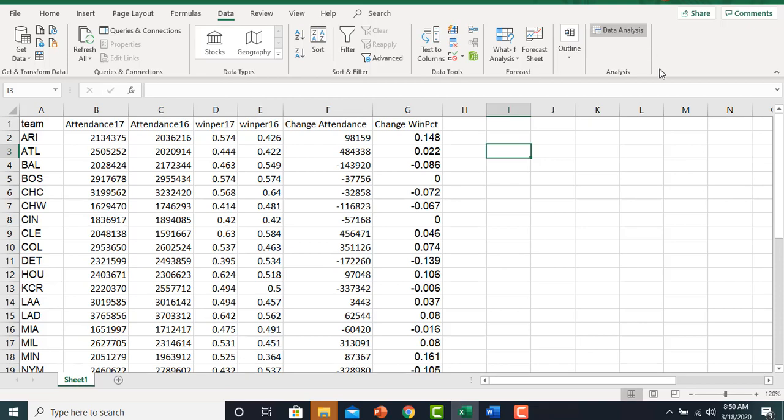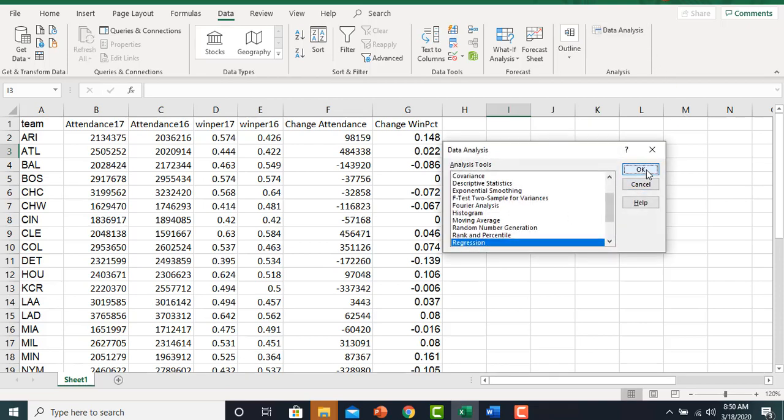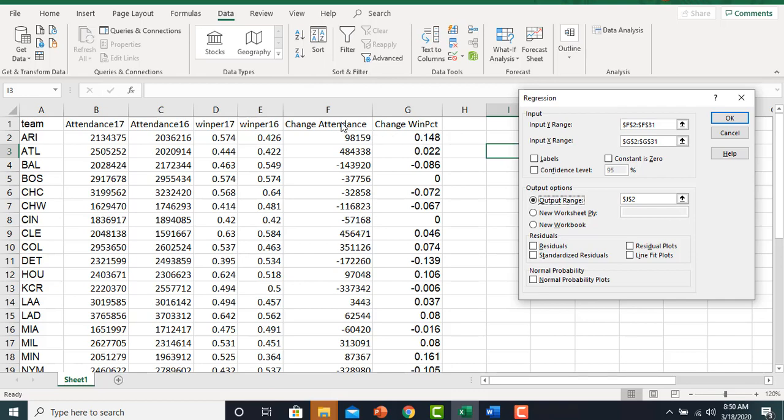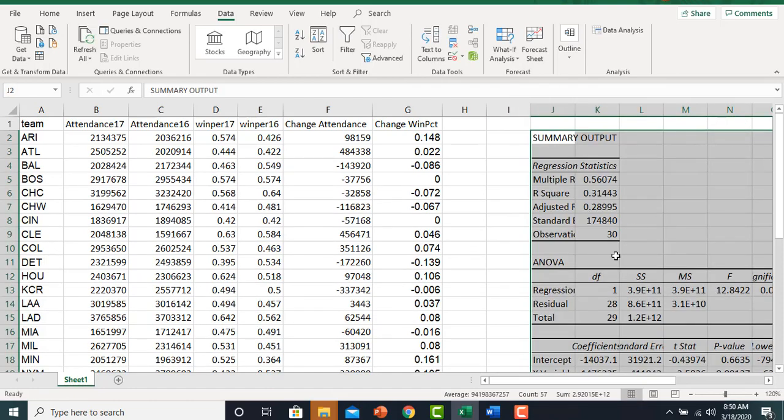I'll pull up the regression package here. Our dependent variable will be this F column. Our independent variable will be this G column. We'll select an output range and hit OK. And we got our results.